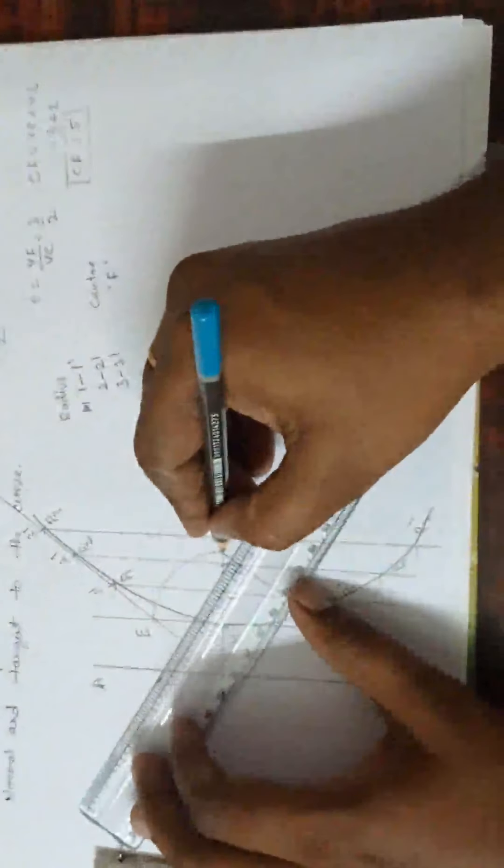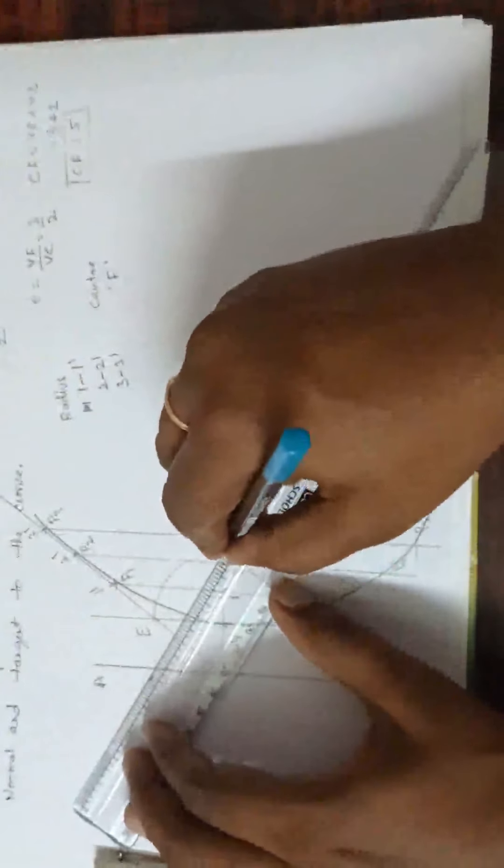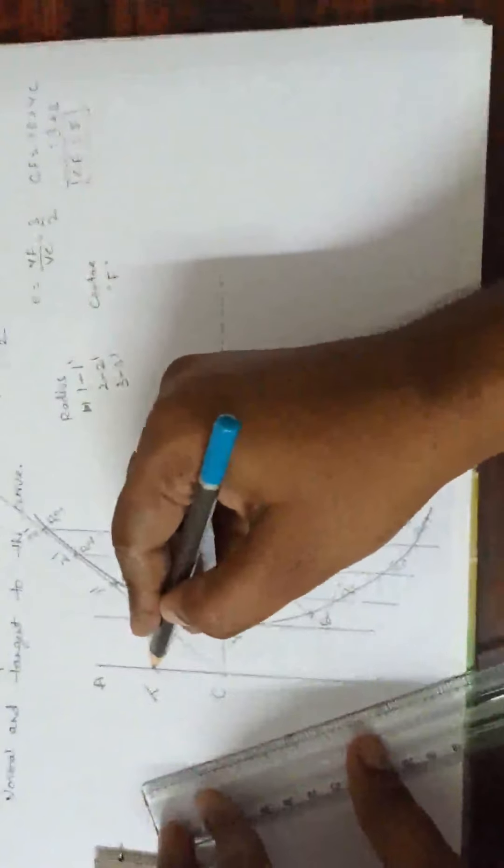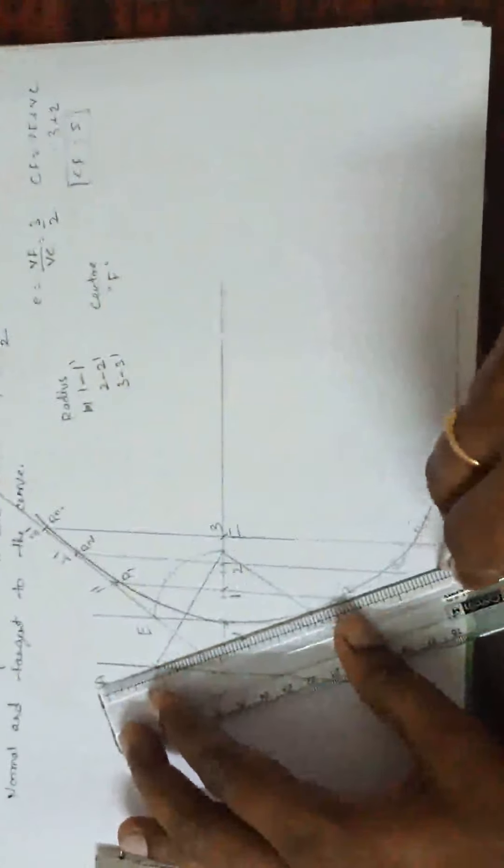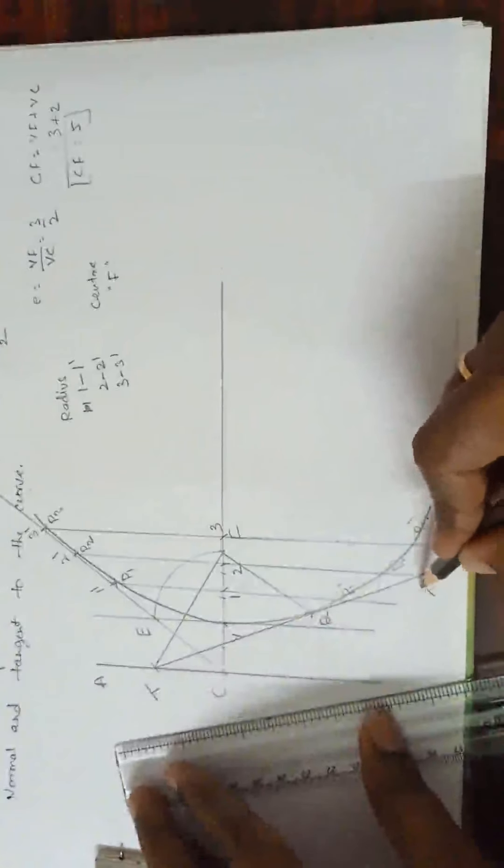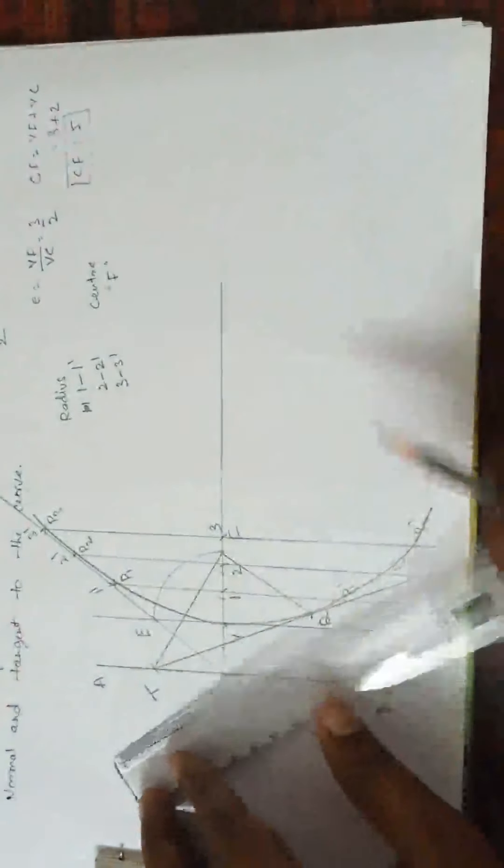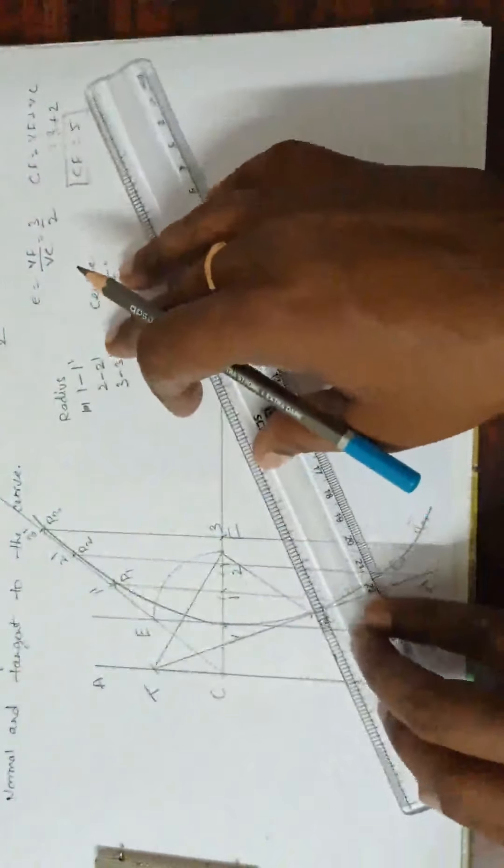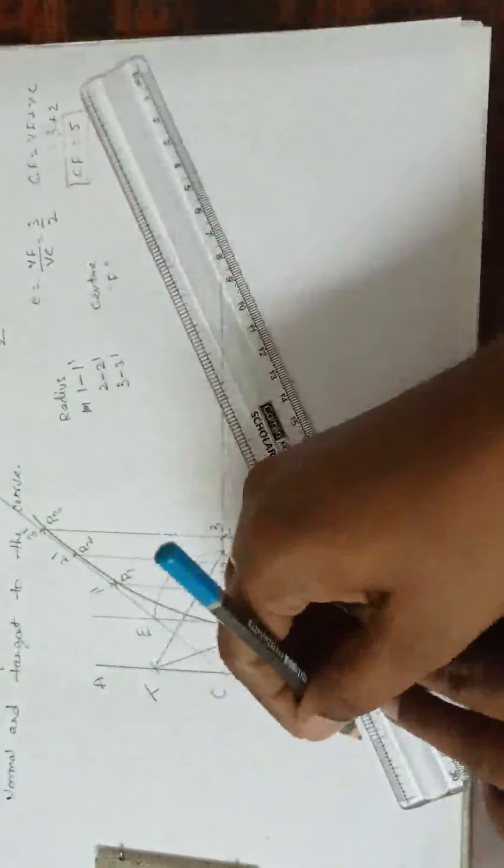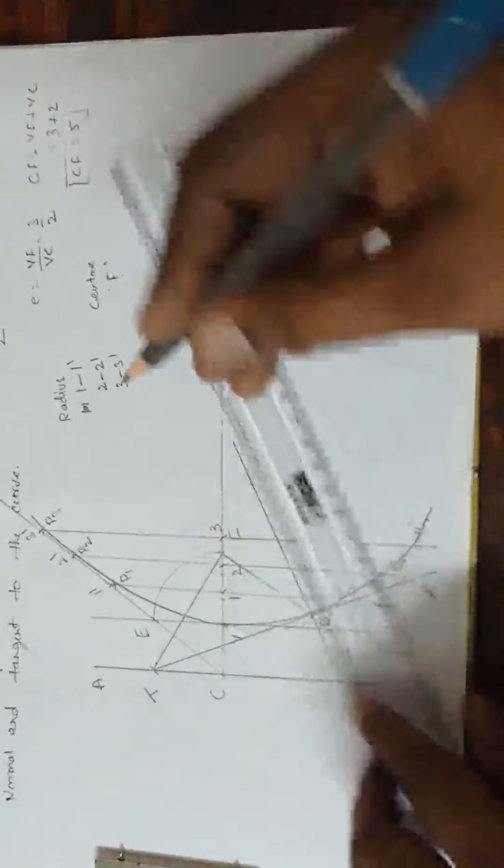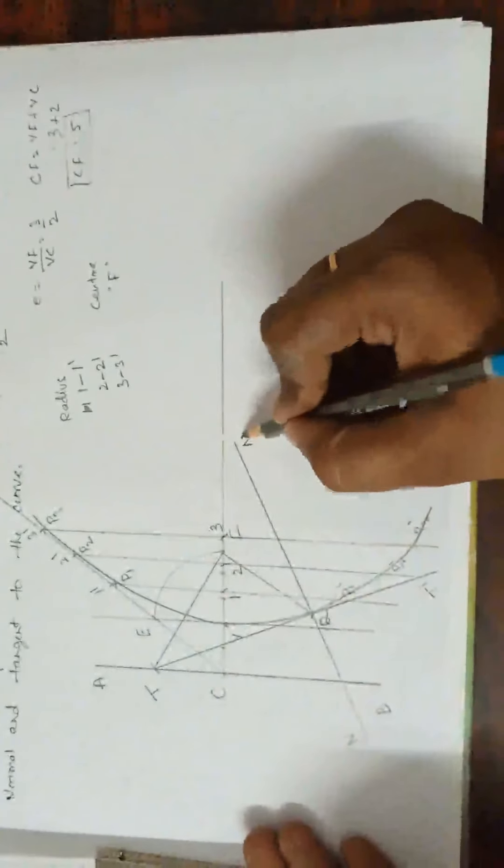Now, from F, join line. This is, I will call it as T. Join T and Q. And this is tangent T, T dash. Extend this line. Now, perpendicular to the tangent is what? Normal. This is N and N dash.